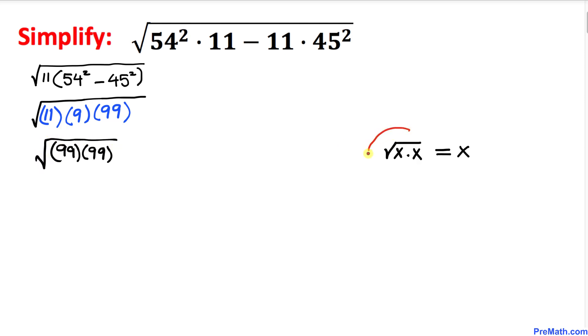And now we are going to use this property: if we have a square root and we have a number, two of a kind, then we remove the square root part. So therefore we got our answer as simply 99.